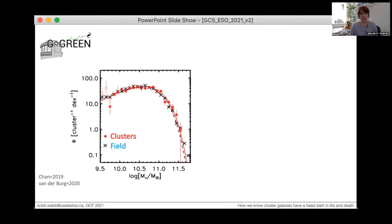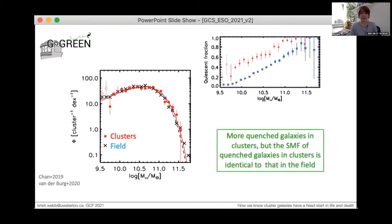In other words, we see an excess of quenched galaxies in clusters, and this excess is relatively mass independent. This cannot be explained by a mass independent quenching mechanism, however, such as environmental quenching invoked by Peng 2010, since you'd end up with an overabundance of the lower mass quenched galaxies.